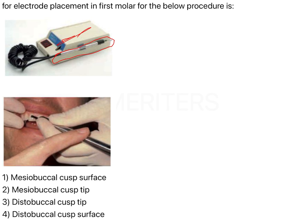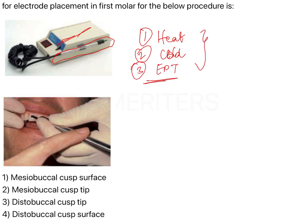The image shows an electrical pulp tester (EPT). This pulp tester helps measure the vitality of the pulp. Methods to assess pulp vitality include the heat test, the cold test, and the EPT electric pulp tester machine. All three help measure the sensitivity of the pulp — specifically, the nerve conduction potential of the pulp.